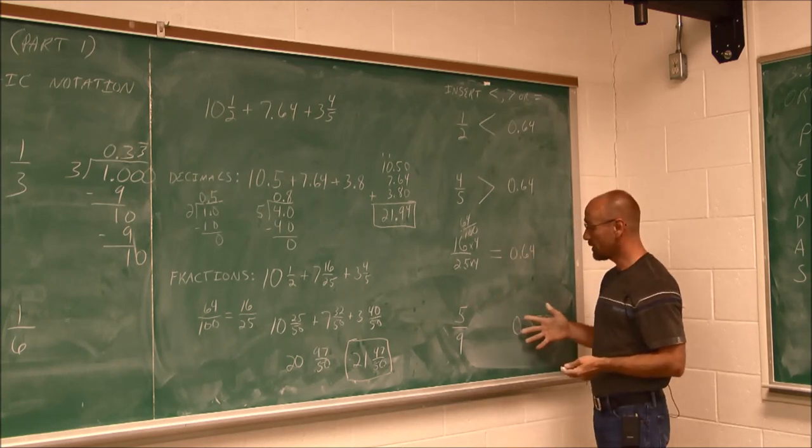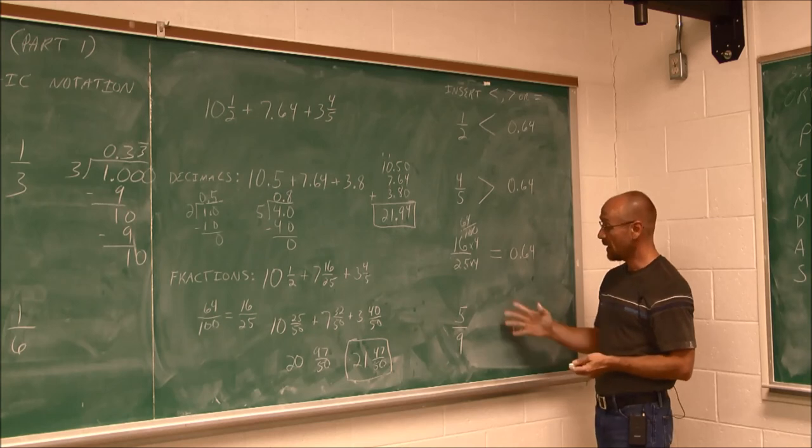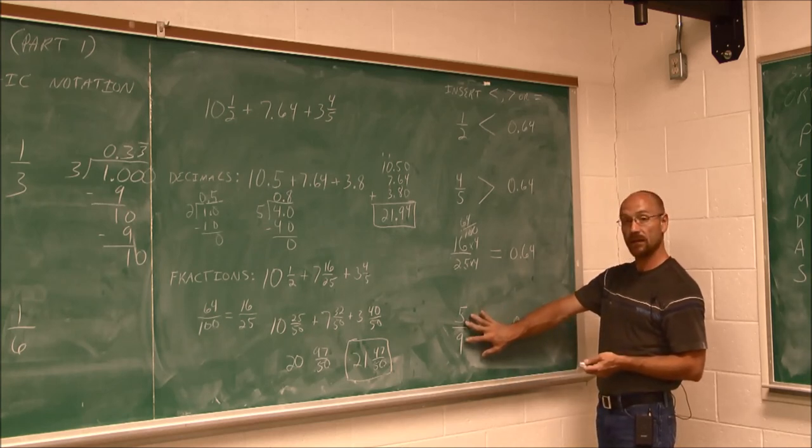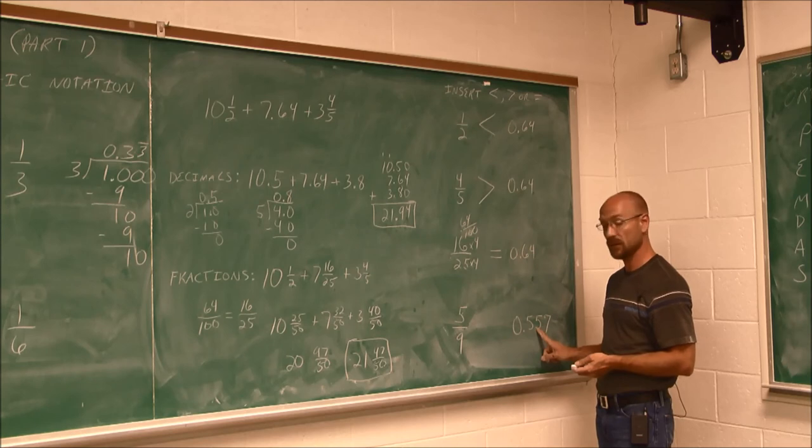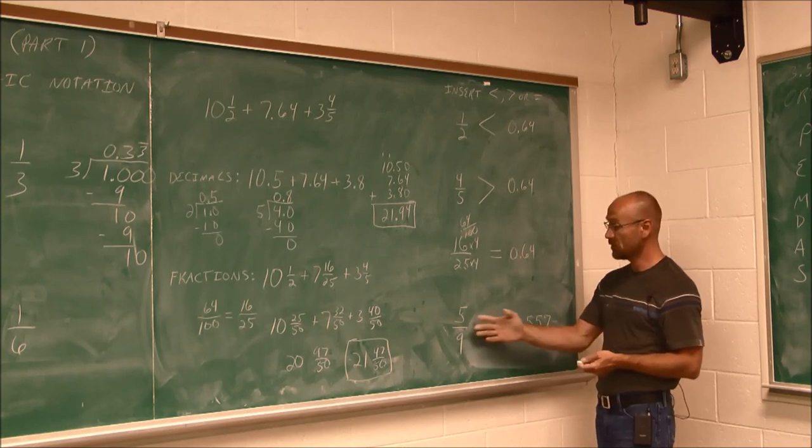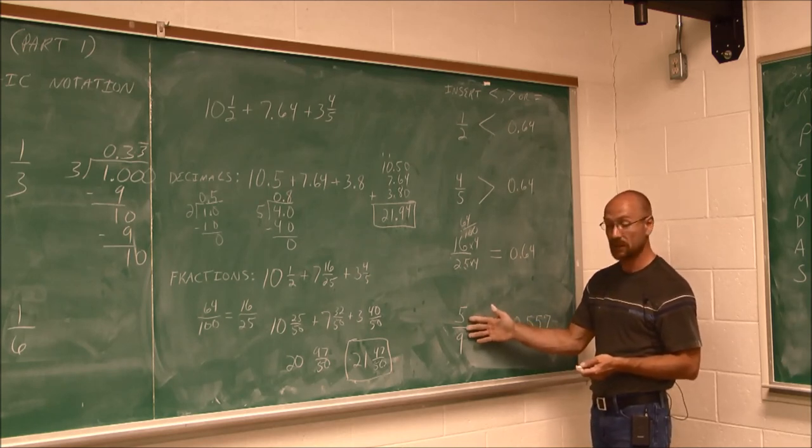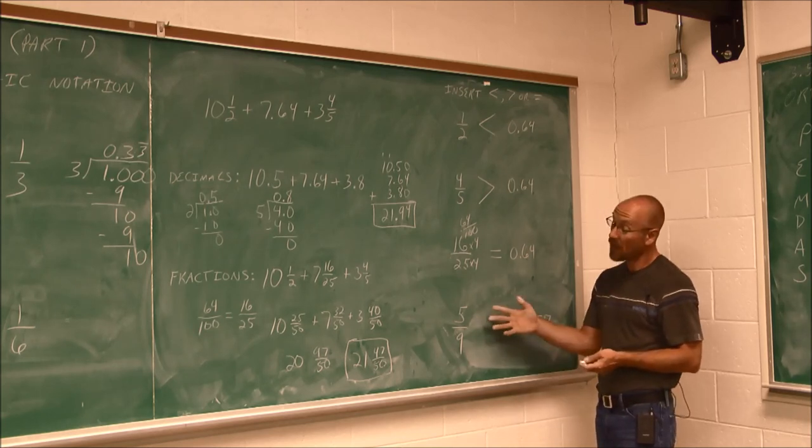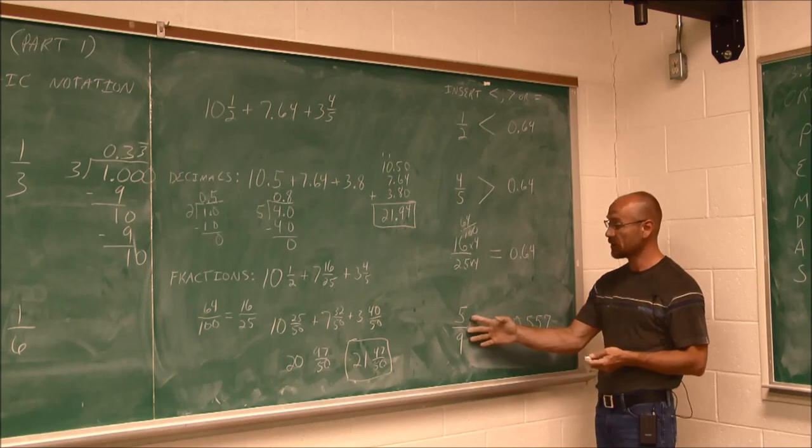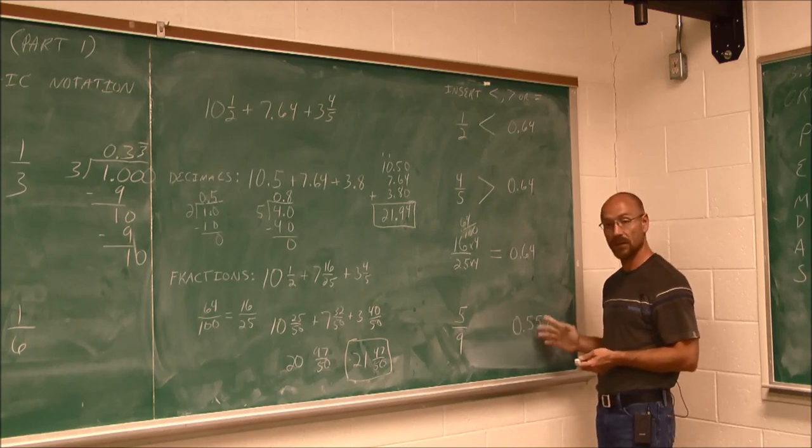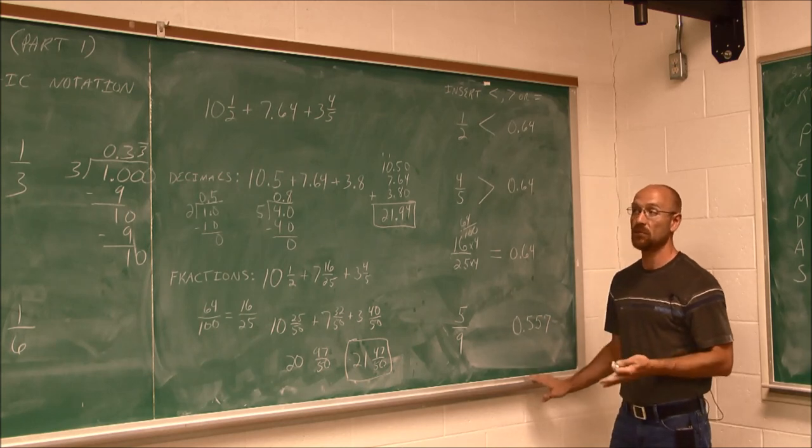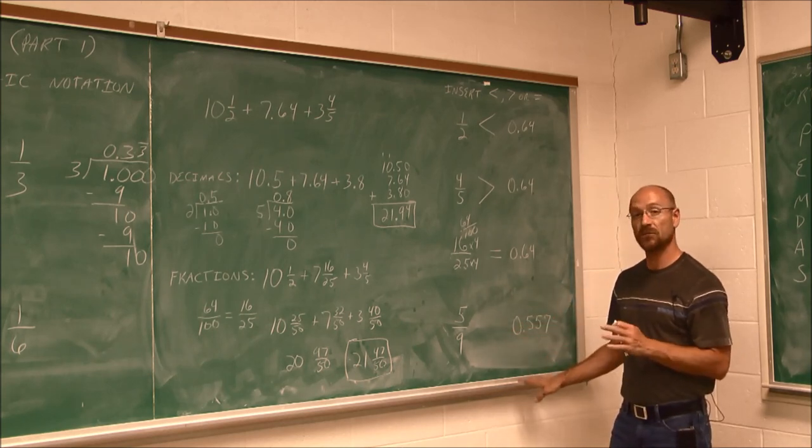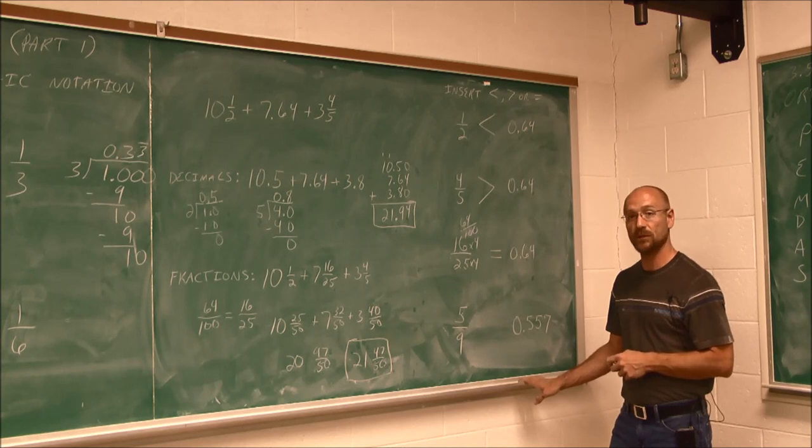Why don't you try this one right here on your own. Determine if this is greater than, less than, or equal to this value. Make sure if you do division to carry this out to the appropriate amount of digits, and possibly round if you have to. This has been section 3.5, decimals and fractions. In the next video, we'll look at order of operations and scientific notation. Thank you.